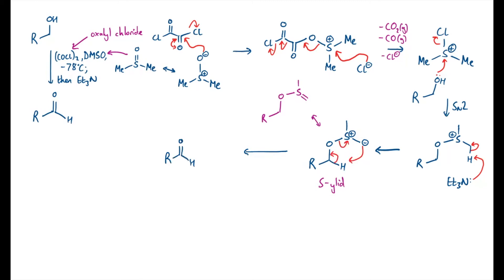If we keep track of those arrows, the other thing we've generated is dimethyl sulfide. At this point in the mechanism, we've got a slightly trickier reaction to do, so we need a little bit more activation energy. You tend to start this off at minus 78 degrees and warm it up to zero degrees, and at some point you'll get the transfer of the hydrogen atom. A word of caution whenever you do a Swern oxidation: dimethyl sulfide is a very smelly compound. All your solvent waste and glassware will need to be treated with bleach when you're working it up, otherwise your lab colleagues will not be happy. But there is a massive advantage — dimethyl sulfide is easy to remove and very volatile, so purification of the aldehyde is quite easy.